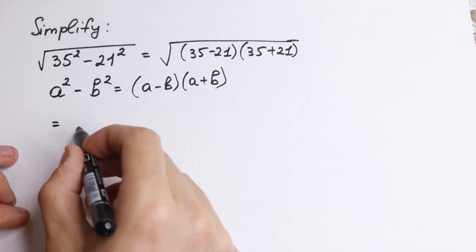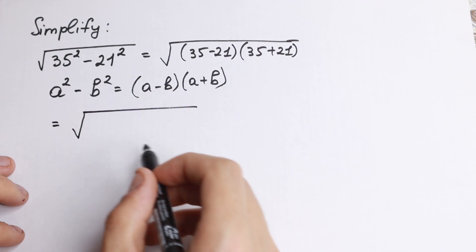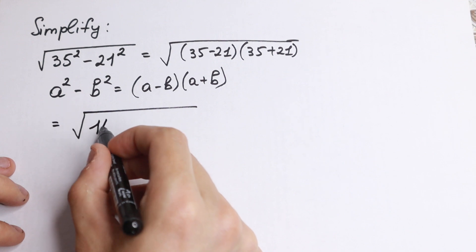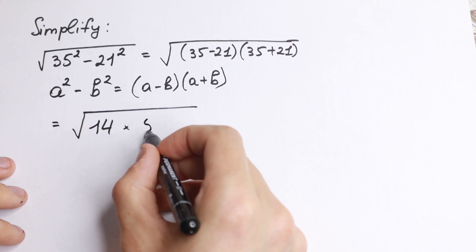But what we will have as a result? Take a look closely. 35 minus 21, we can easily find this answer - it will be equal to 14, and we multiply it by 35 plus 21, which equals 56.